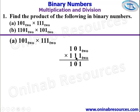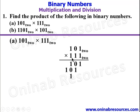We then start with the middle 1 as the multiplier: 1 times 1 gives 1, 1 times 0 gives 0, and 1 times 1 gives 1. Then the first 1 here will be used as multiplier: 1 times 1 gives 1, 1 times 0 gives 0, 1 times 1 gives 1.